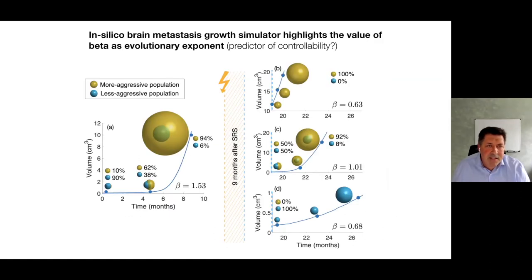These are more simulations with the mesoscopic simulator I showed you before. Essentially, if you have variability within the tumor, you have this beta close to 1.5 exponent. After treatment, you have less heterogeneity and typically get numbers below 1.